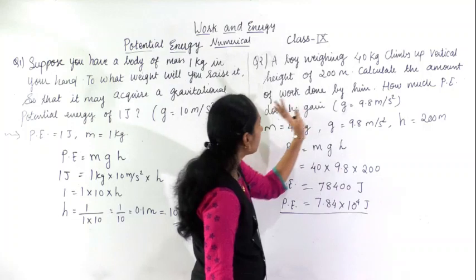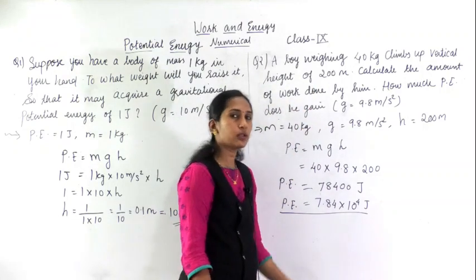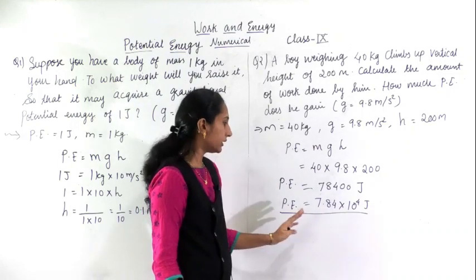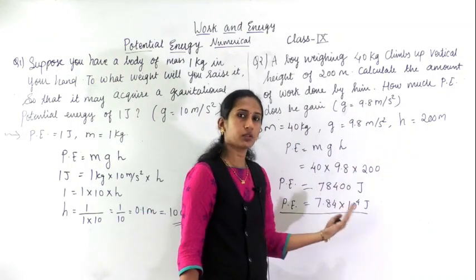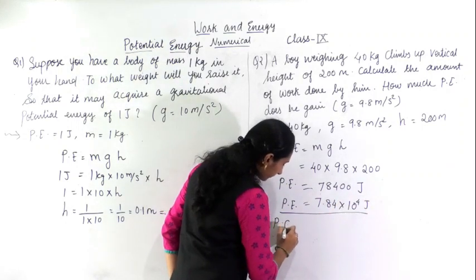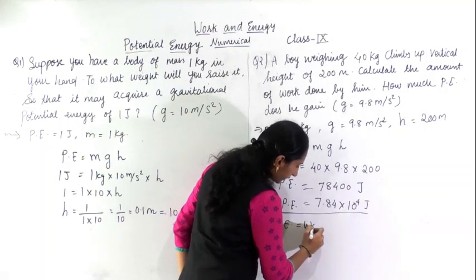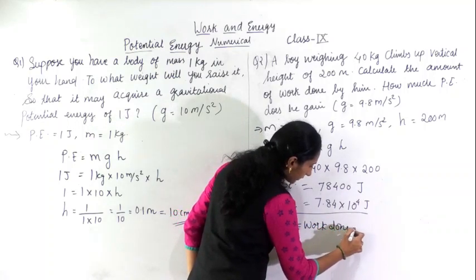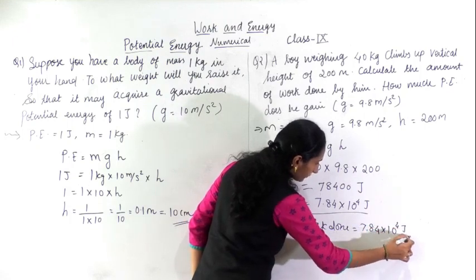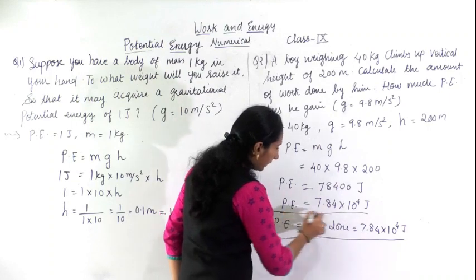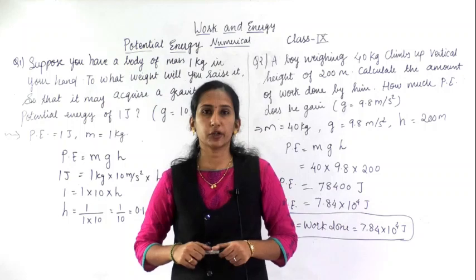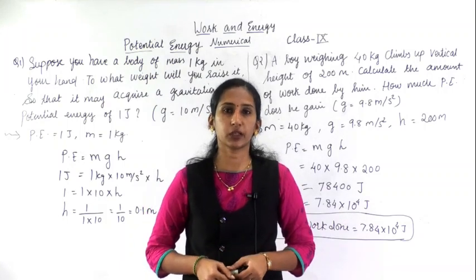You have to calculate the amount of work done by him. As I have studied, work done equals gain in energy. In the derivation, I have shown you that work done equals potential energy, equals gain in energy of the body. Your potential energy equals work done, same answer you will get: 7.84 into 10 raised to 4 joules. This will be your answer. Similar problems I will give you. Just try to solve it and send me the answers. Thank you.